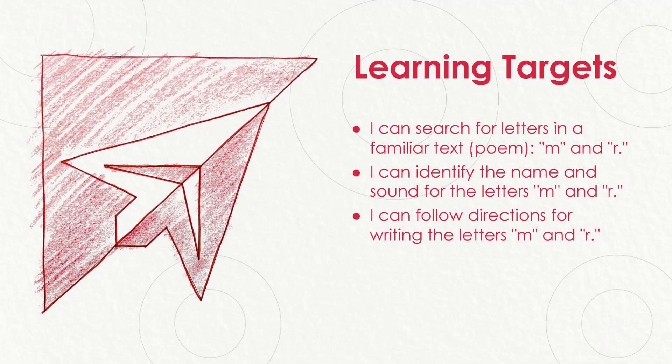There are three learning targets for our lesson today. The first target says I can search for letters in a familiar text or poem — letters M and R. The second target says I can identify the name and sound for the letters M and R. And the last target says I can follow directions for writing the letters M and R.